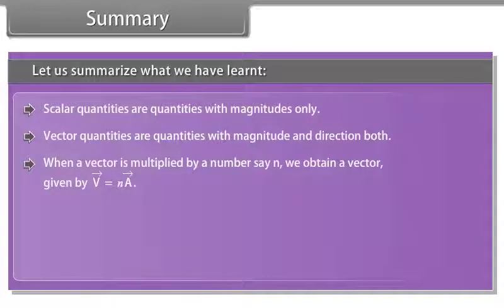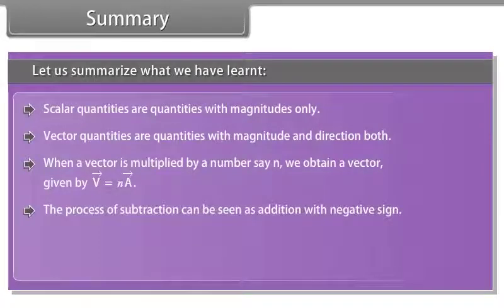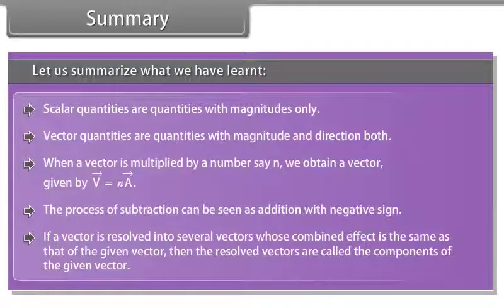The process of subtraction can be seen as addition with negative sign. If a vector is resolved into several vectors whose combined effect is same as that of the given vector, then the resolved vectors are called the components of the given vector.